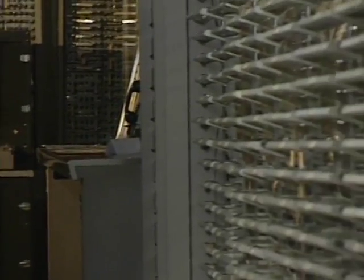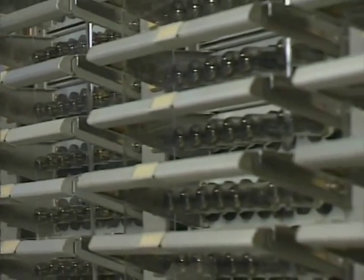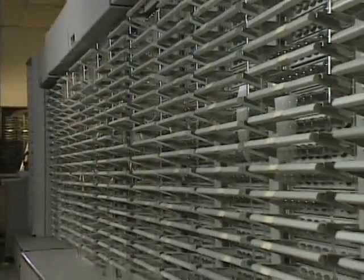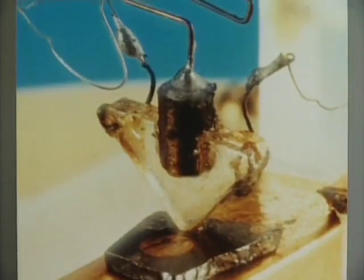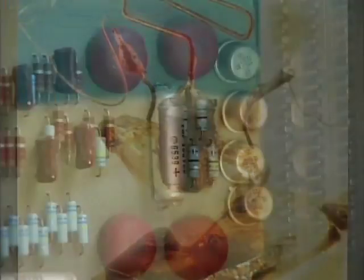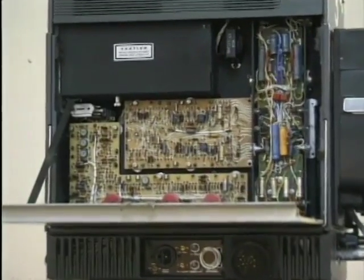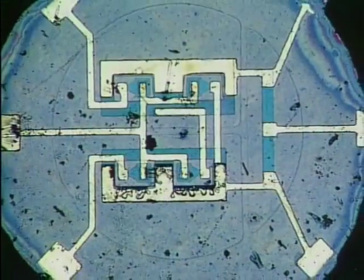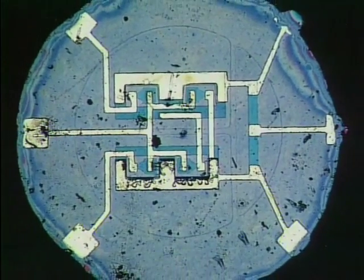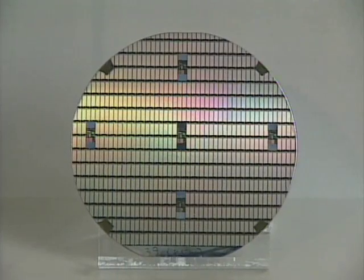To better understand EDA, let's look back at the first electronic computers. They required thousands of large vacuum tubes for their internal operations. The invention of the transistor in 1947 replaced the vacuum tube and ushered in the era of modern electronics. The demand for smaller, more reliable technology fueled the development of the integrated circuit in 1959. Transistors and other components could now be integrated on the surface of silicon wafers.